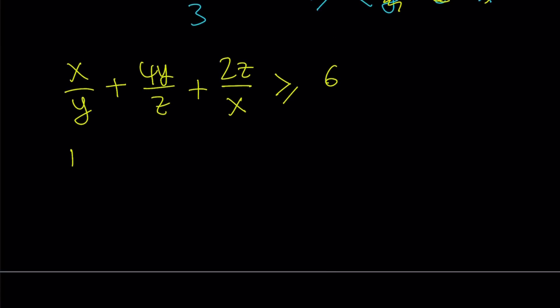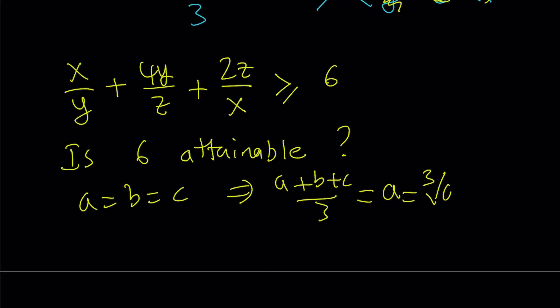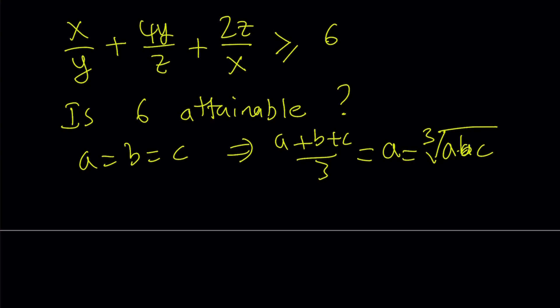So the question is, is 6 attainable? And by AM-GM, it is attainable because if A equals B equals C, then our inequality turns into A plus B plus C over 3. I can basically replace B and C with A. That gives me A. And obviously, that is the cube root of A, A, A. Or you can write it as A, B, C if you want because they're all equal. The cube root of their product is going to be A. So in order for that inequality to turn into an equation, they all have to be equal.